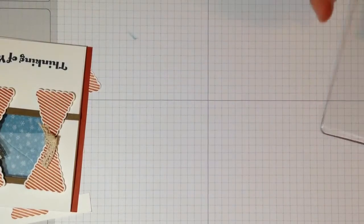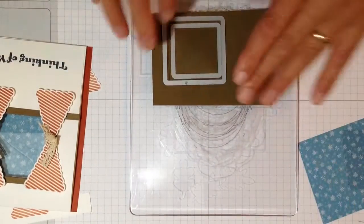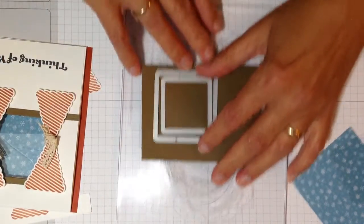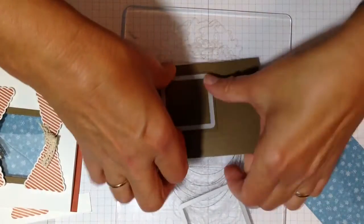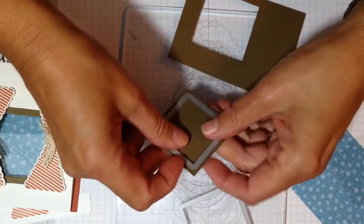So for this, I'm using the Square Collections Framelits. You can see I put it through just like this to make the frame, and of course you just pick whichever size you wanted.